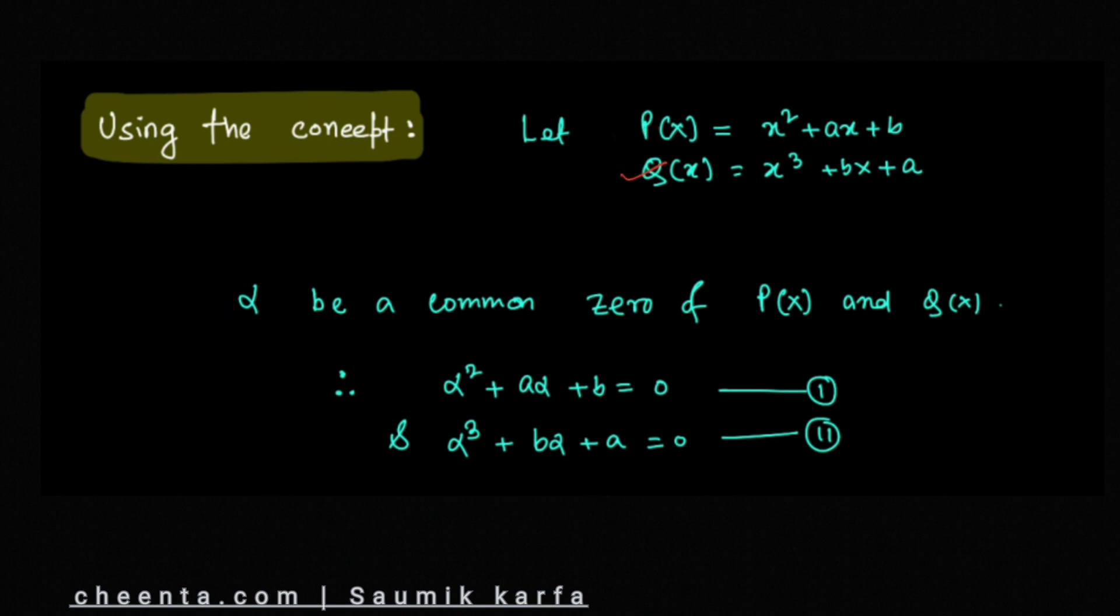then we can say that at α, both p(x) and q(x) are going to be 0. So we get α² + aα + b = 0 and α³ + bα + a = 0.